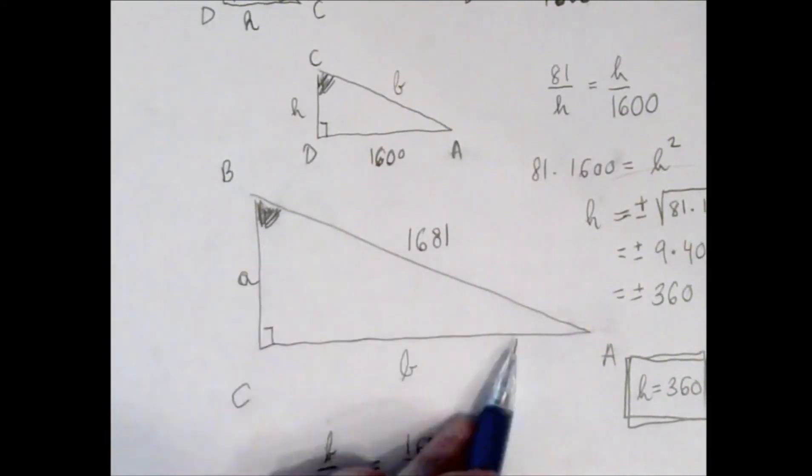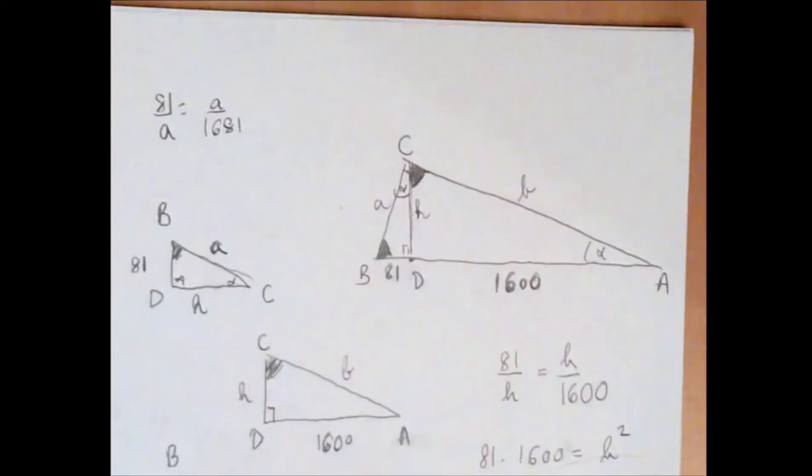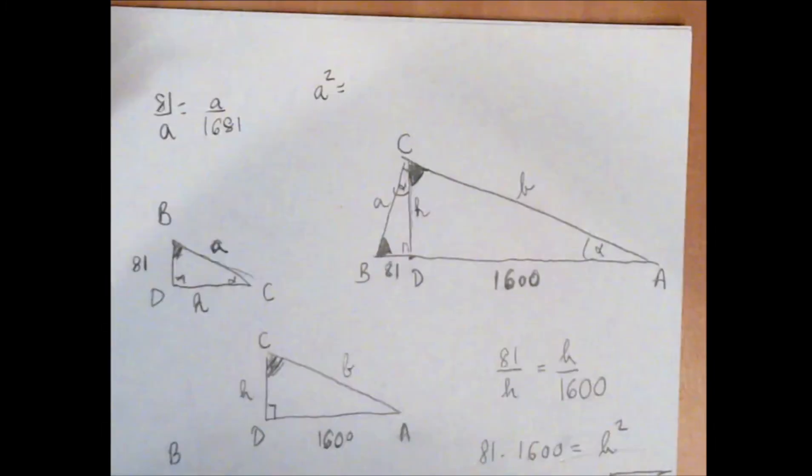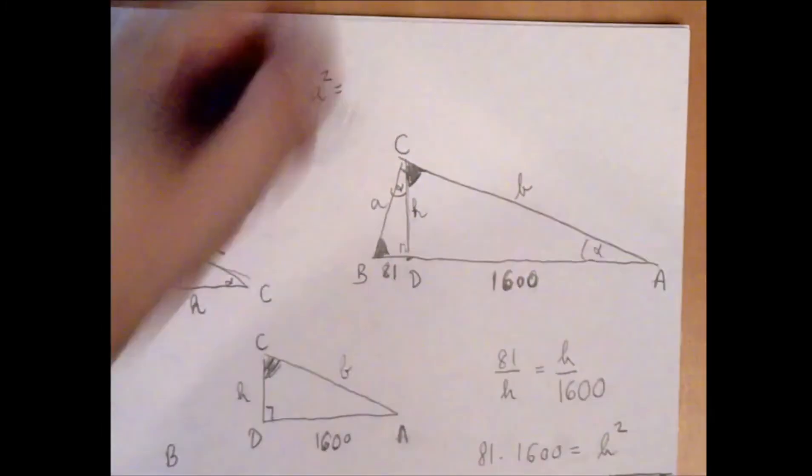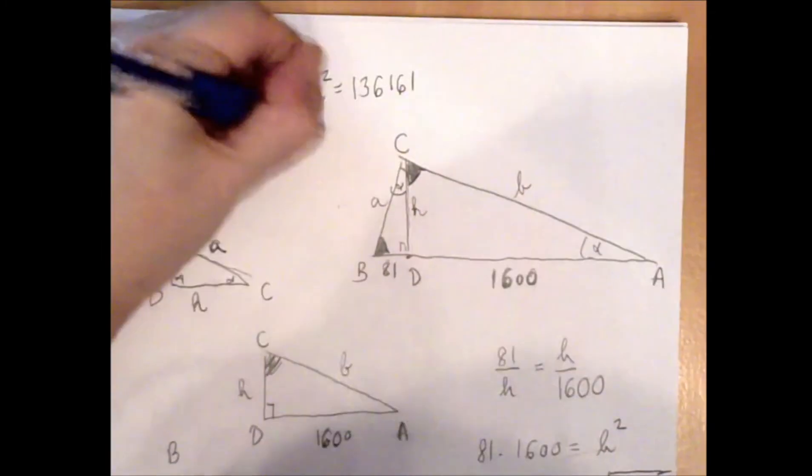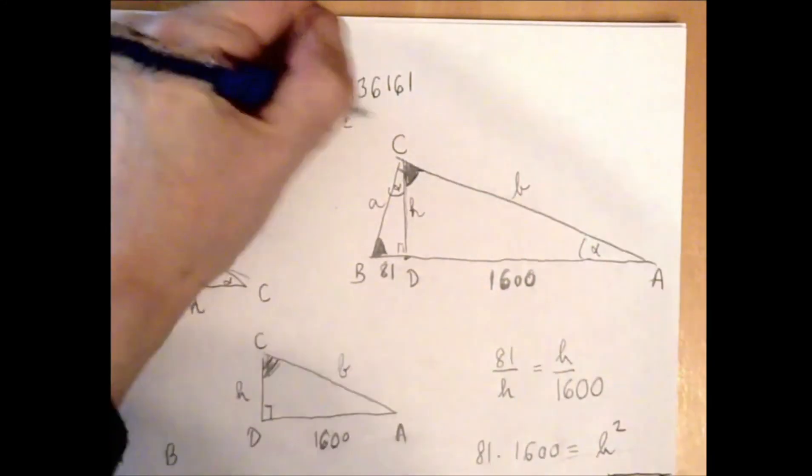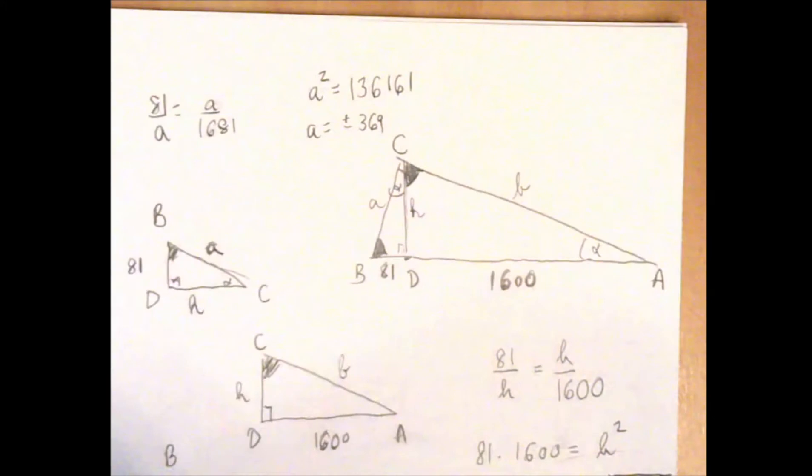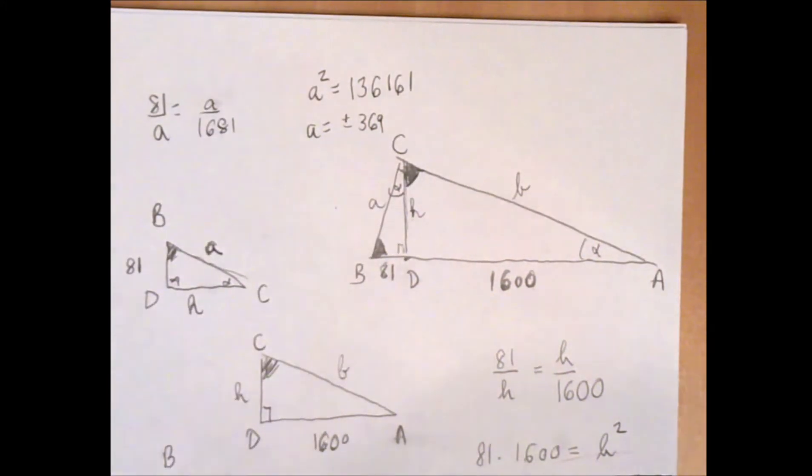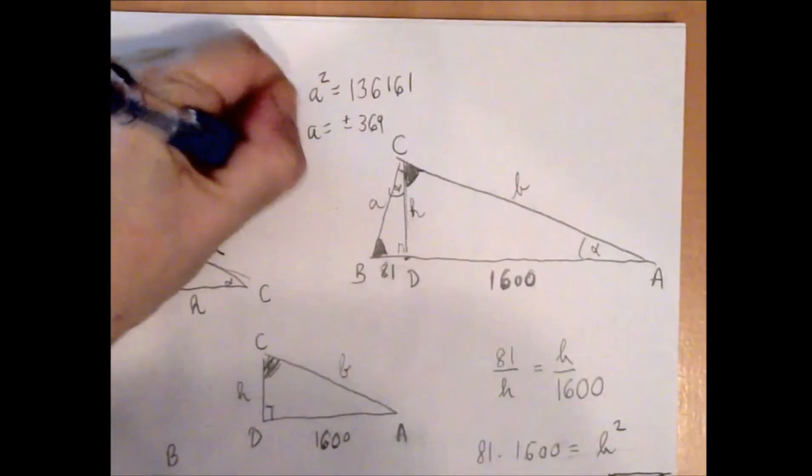A appears here and here, and that will work. 81 to a, a to 1681. The vertical side over the hypotenuse is 81 over a in the small triangle, and the vertical over the hypotenuse is a over 1681 in the big triangle. Again we get a² equals 136,161, and that is a square—it's the square of 369.